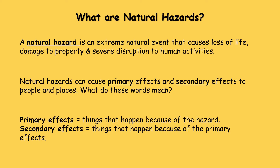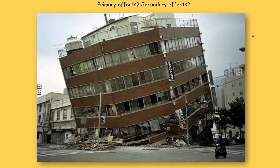Let's look at an example. Here, the hazard is an earthquake. The primary effect of the shaking of the ground is that the building has collapsed — so the building collapse is our primary effect. The secondary effect is something that happens because of the building collapse: people die, having to claim lots of money on insurance, or this road being cut off or blocked as a result of the building collapsing.